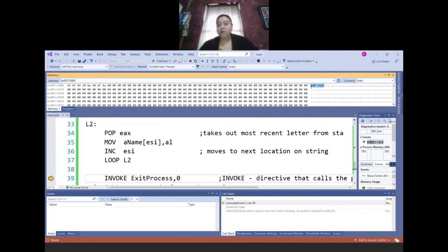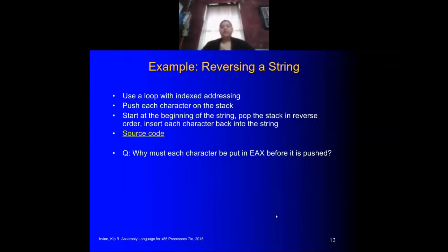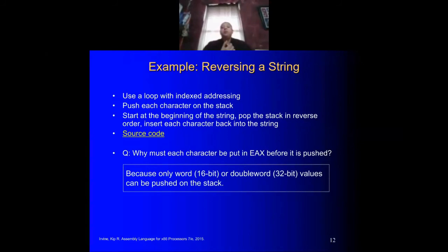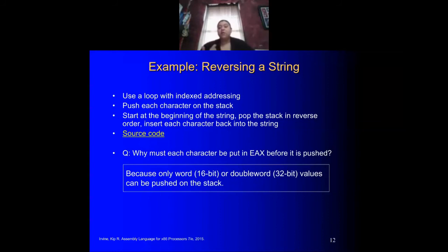Why must we move the character into EAX before pushing it? Because characters are one byte (8-bit), and the PUSH instruction only works with 16-bit or 32-bit operands. So we move with zero extension into EAX to expand the byte into a full 32-bit value before pushing, ensuring the full 32-bit register is used rather than just 16 bits.